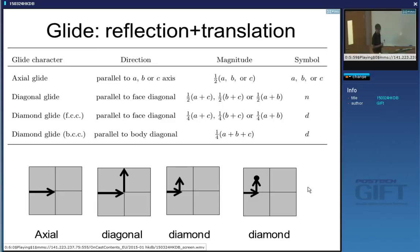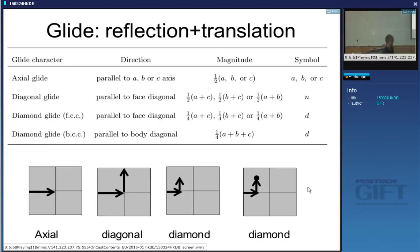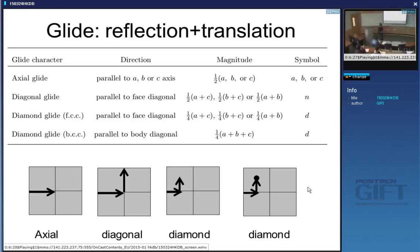For glide planes, an axial glide plane (symbol a, b, or c) is a translation by half the repeat distance parallel to the mirror plane. A diagonal glide plane (symbol n, as opposed to m for mirror) is a translation of half in one direction and half in another direction, giving a diagonal glide.